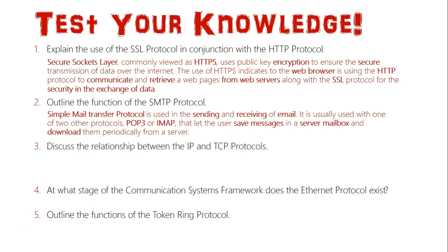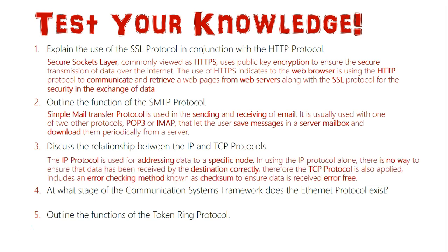Question three: discuss the relationship between IP and TCP protocols. The IP protocol can work on its own — it is essentially addressing at the communication control and addressing level of the communication systems framework. It identifies the specific node that data is going to be sent to. However, if used alone, there is no way to ensure that data has been received correctly at the destination. That's why we use the TCP protocol, which has an error-checking method known as checksum, used to ensure that data packets received at the destination are error free. If they are error free, it's confirmed they arrived correctly; if not, the sender is notified and must retransmit the data. This is why IP and TCP are often used in conjunction — IP for addressing, TCP for ensuring data reached its destination correctly.